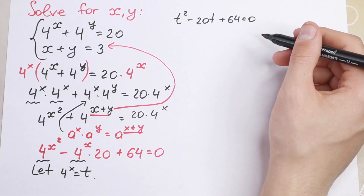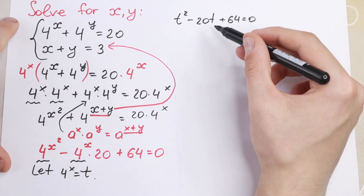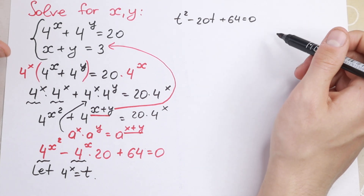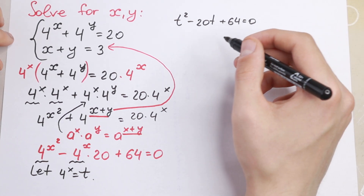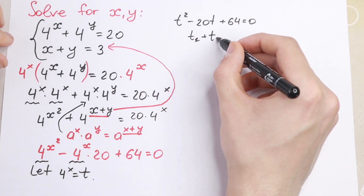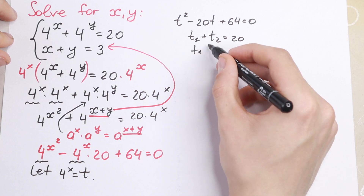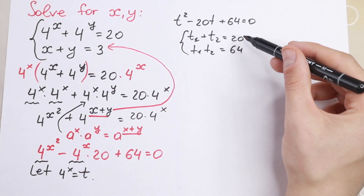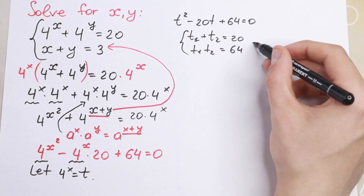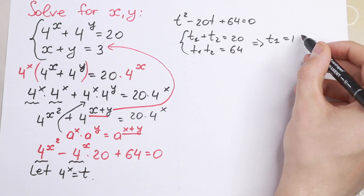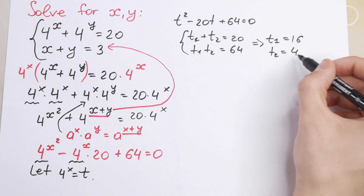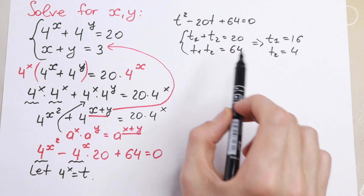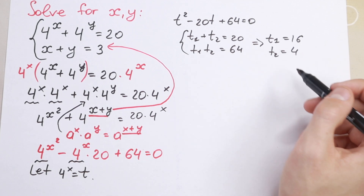So we now have t squared minus 20t plus 64 equal to zero. We solve this quadratic by finding t1 and t2 such that t1 plus t2 equals 20 and t1 times t2 equals 64. The answer is t1 equal to 16 and t2 equal to 4, since 16 plus 4 is 20 and 16 times 4 is 64.